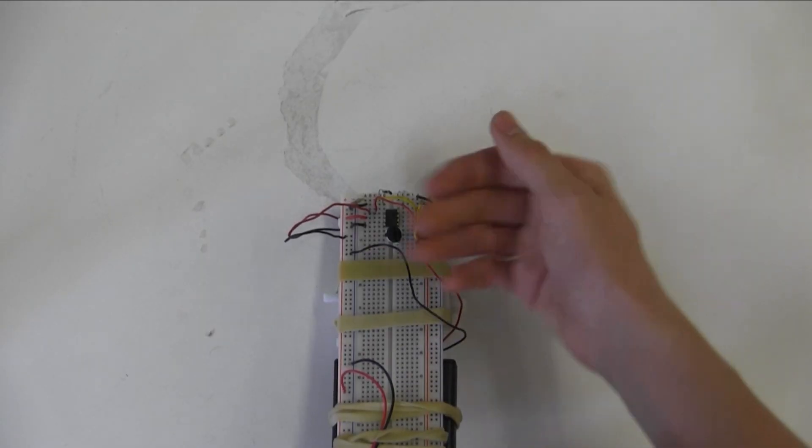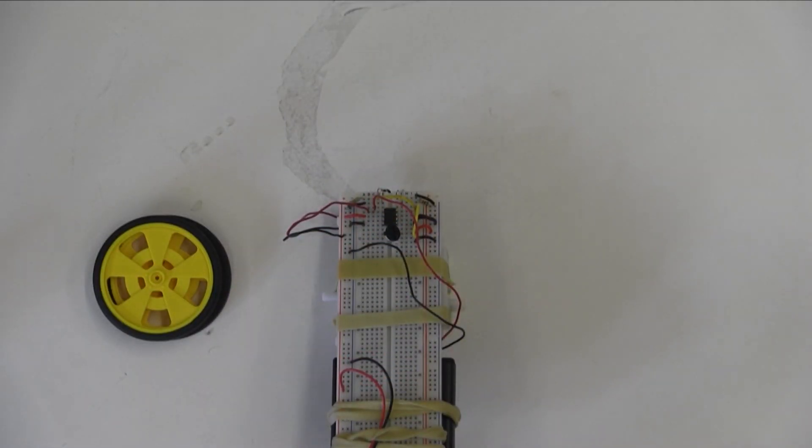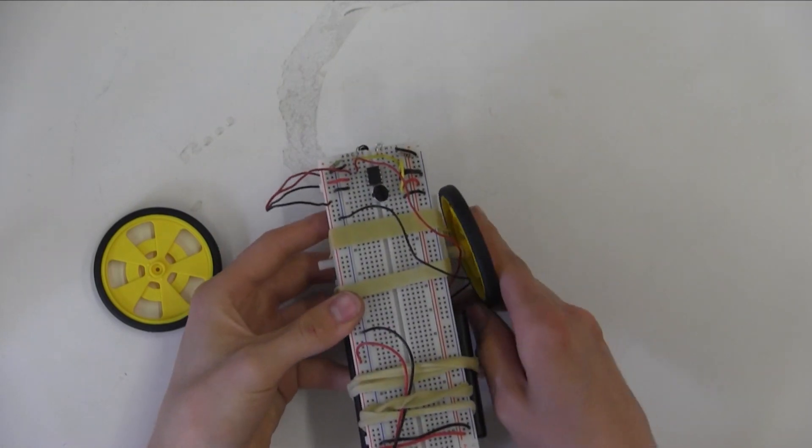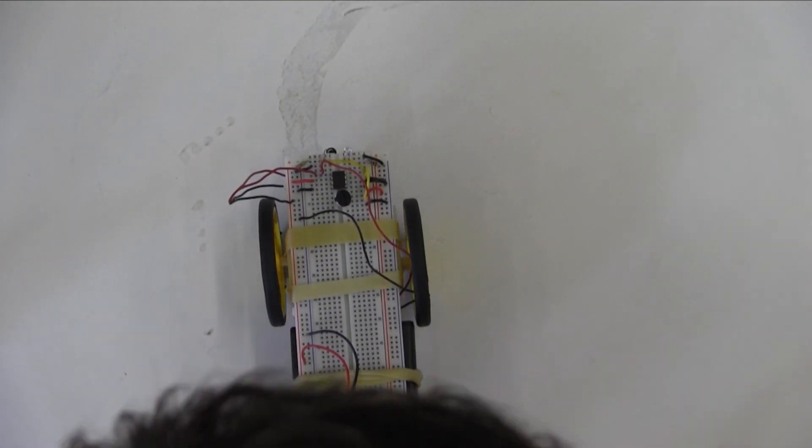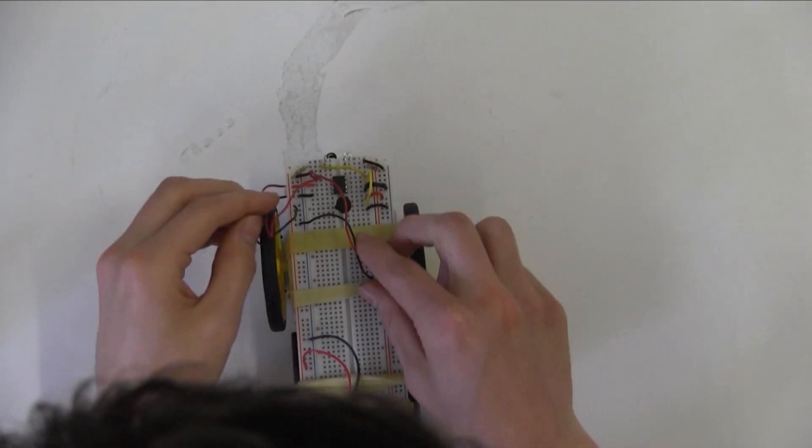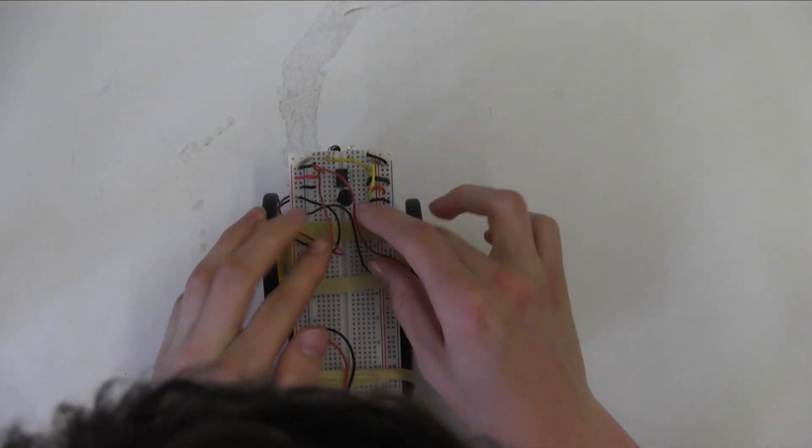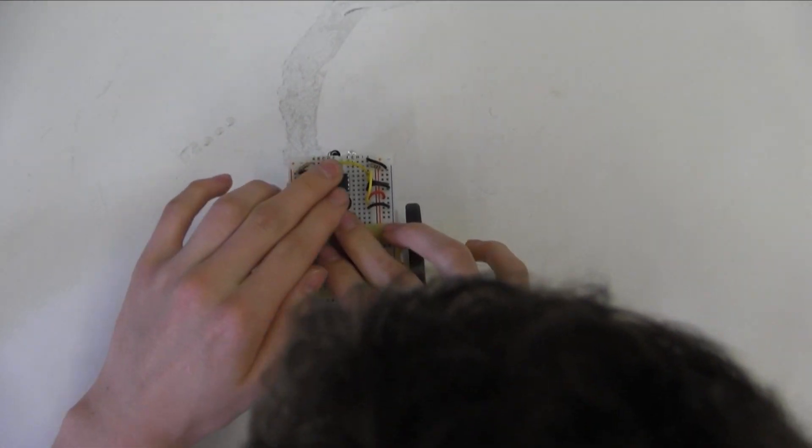Now that everything is plugged in, put your plastic wheels onto the motors. Give yourself a minute to tidy up any loose wires, realign your LEDs, and check to make sure everything is in place correctly.